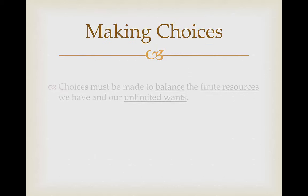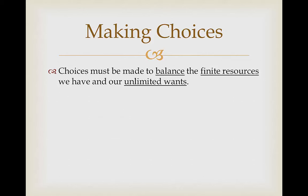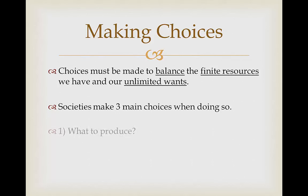Choices have to be made to balance finite resources and unlimited wants. There are going to be three main choices. The first is what to produce. We need to know what we have to produce in order to allocate all these resources appropriately. For example with fuels, are we going to produce more renewable fuels or more non-renewable fuels in order to meet our energy needs? It all depends on what we're producing.